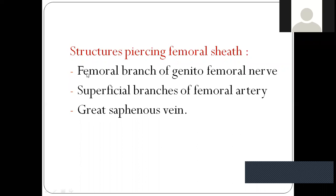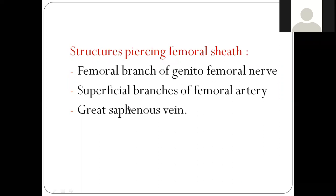Structures piercing the femoral sheath: one is the femoral branch of the genitofemoral nerve. Apart from that, you will see superficial branches of the femoral artery — superficial external pudendal, superficial epigastric, and superficial circumflex iliac. These three branches pierce the femoral sheath. The great saphenous vein is also seen piercing the cribriform fascia and then entering the femoral sheath to drain into the femoral vein.